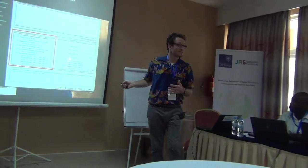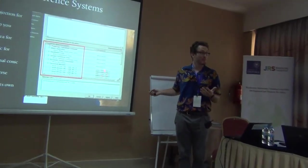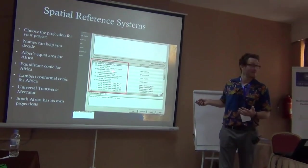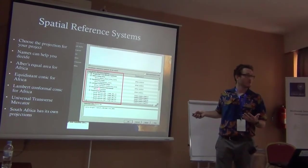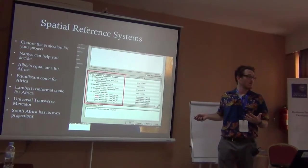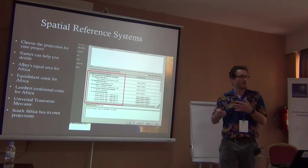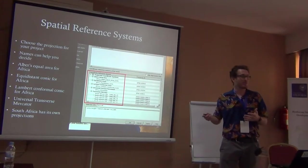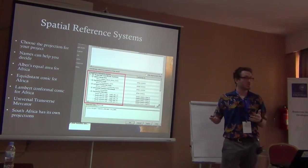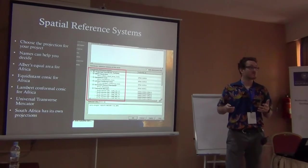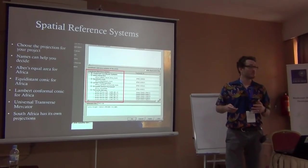Luckily, QGIS helps with this — it labels projections as equal area, equidistant, or conformal, so it helps us know which geometry is being preserved and guides us in choosing the appropriate coordinate reference system.